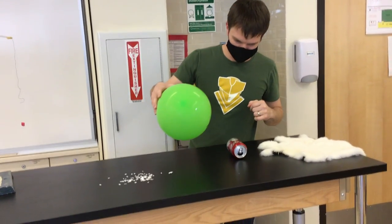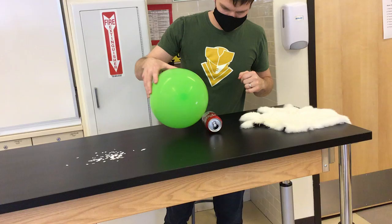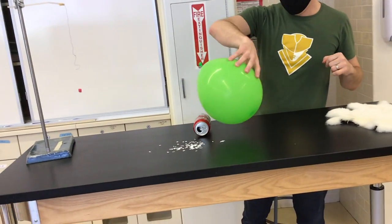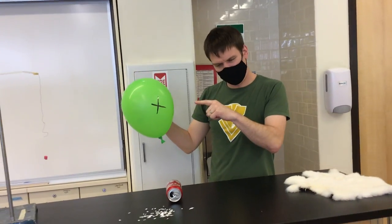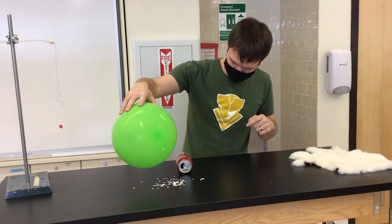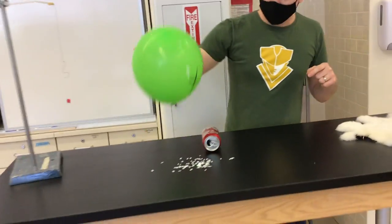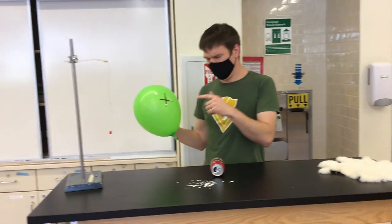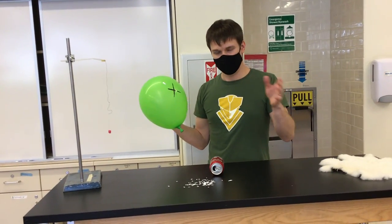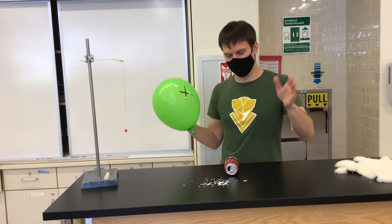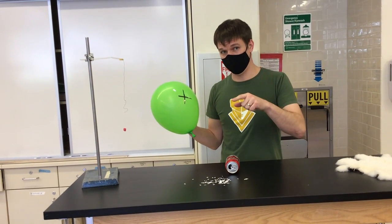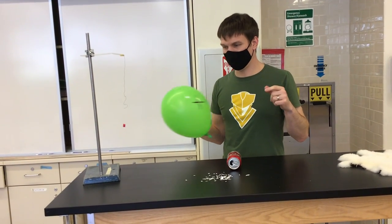See what happens. Whoa! So now I have a positively charged object that attracts a neutral. Let's see if it works for the paper. Oh, there it goes! So it's not a rule that just the negative object attracts a neutral—a negative attracts a neutral and a positive attracts a neutral.